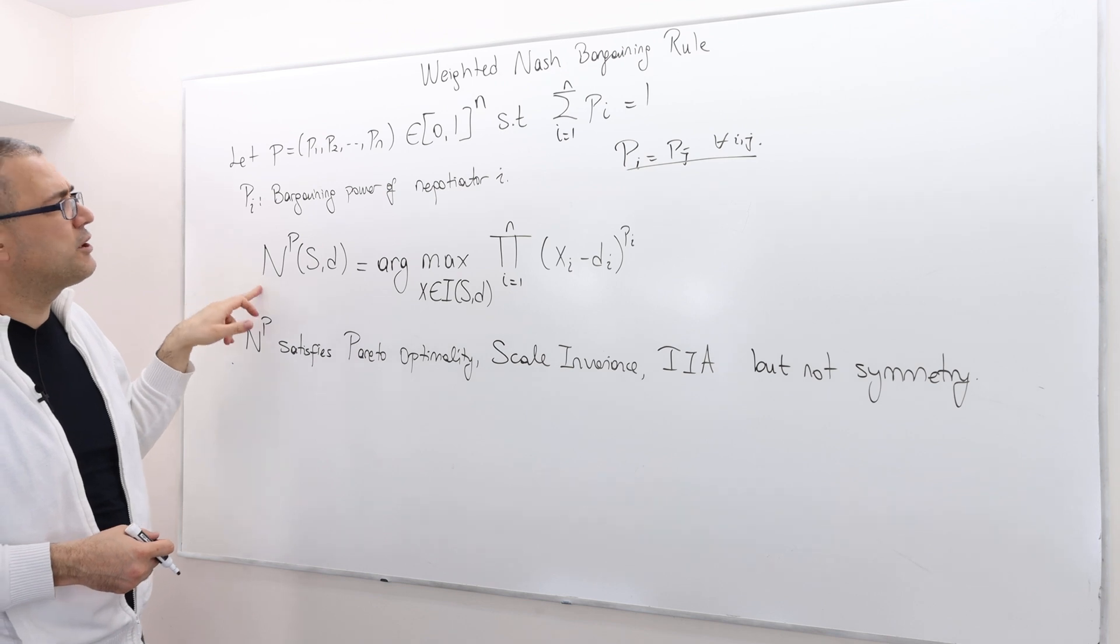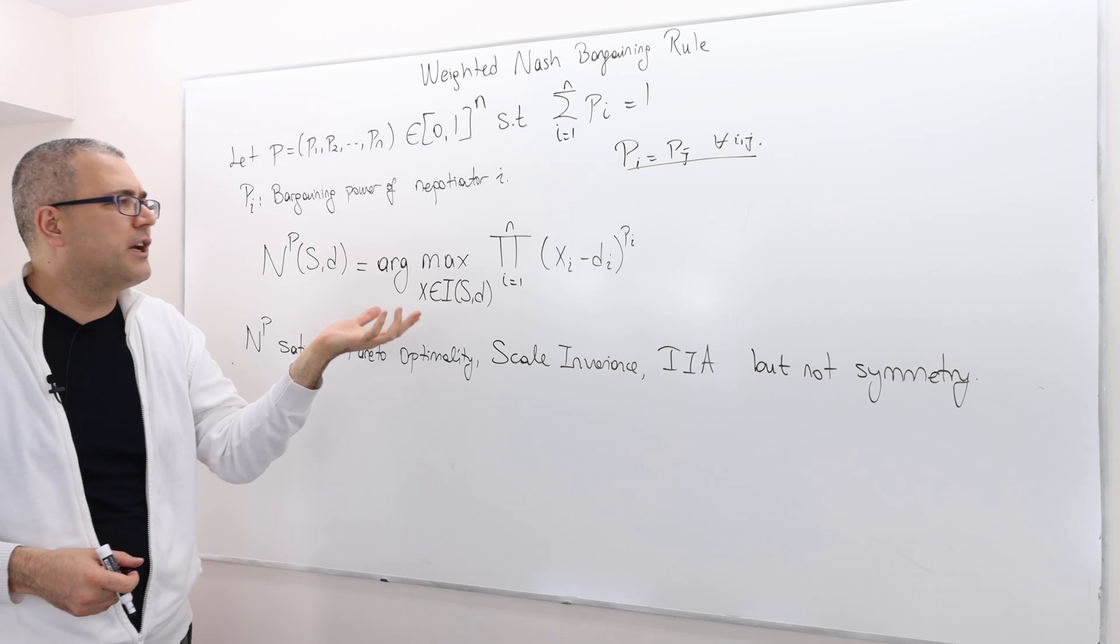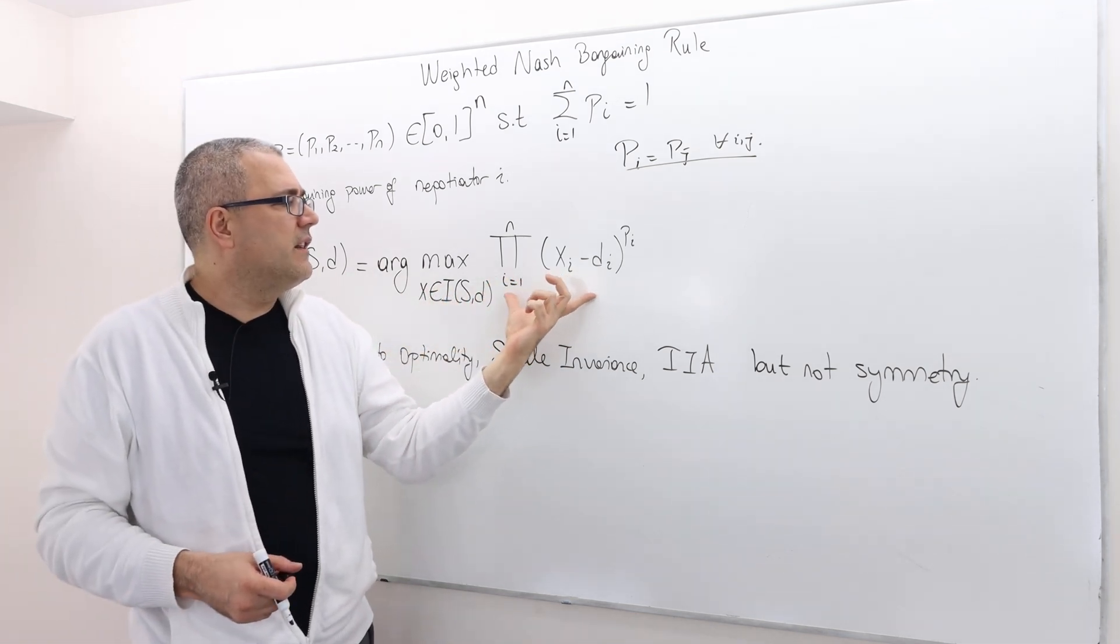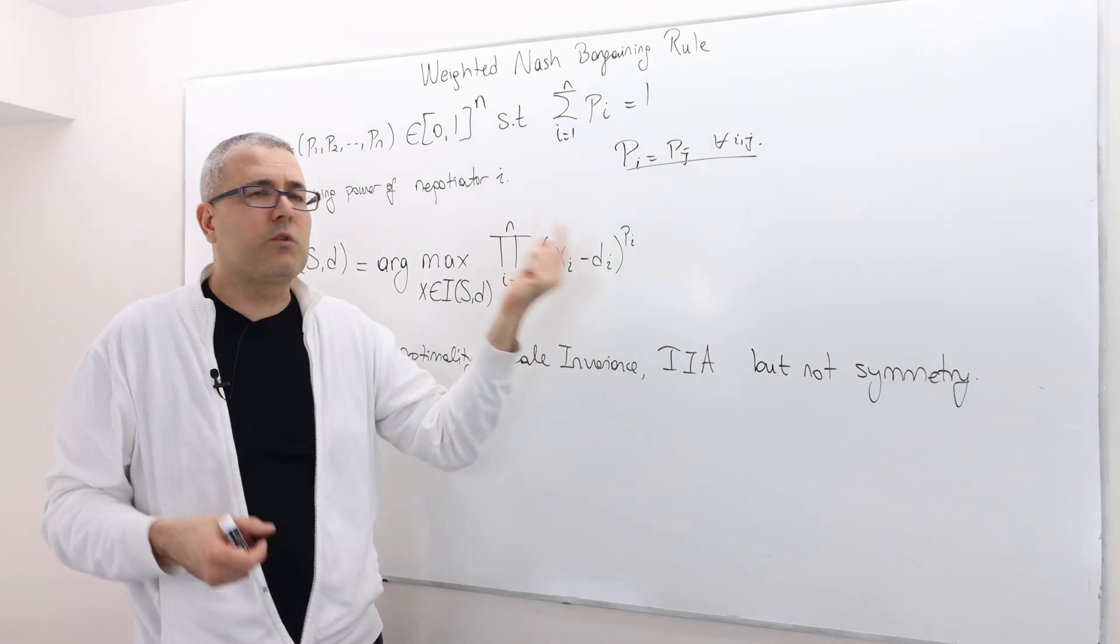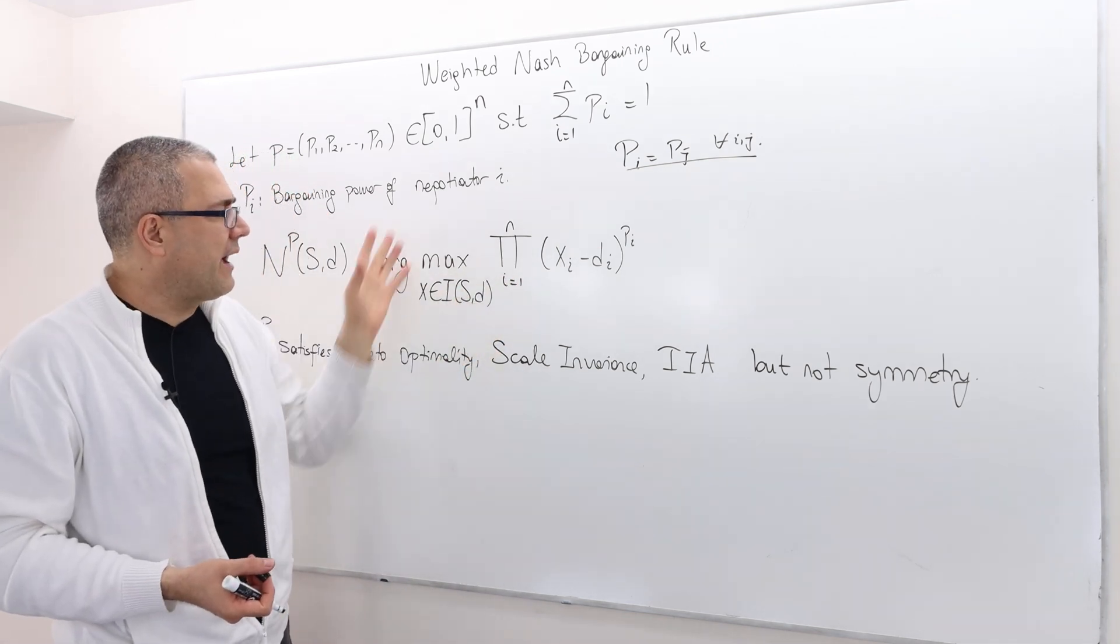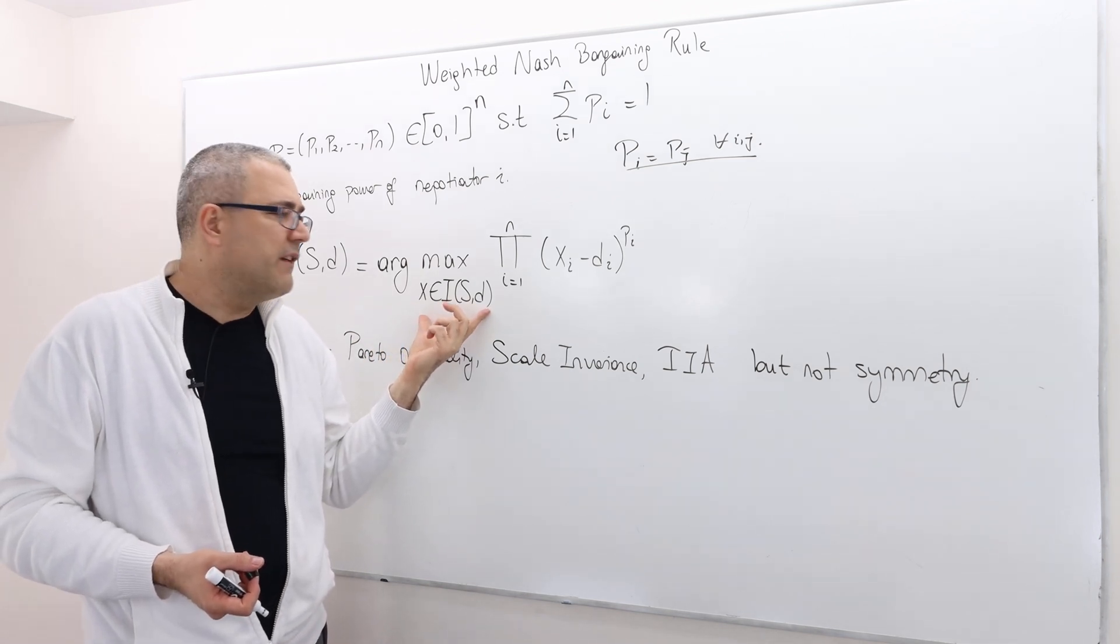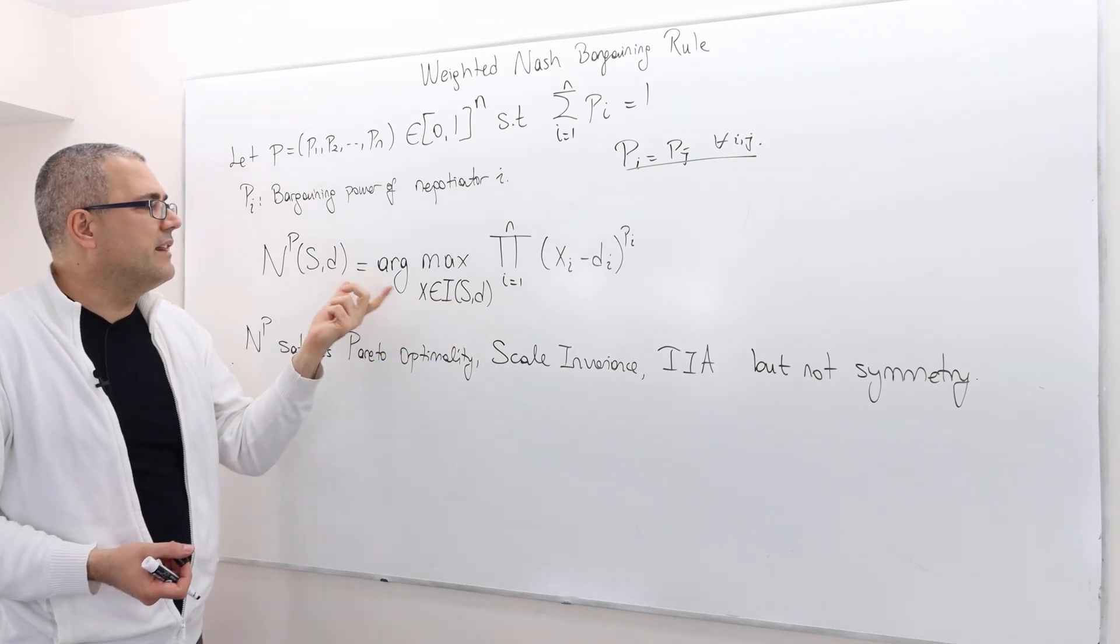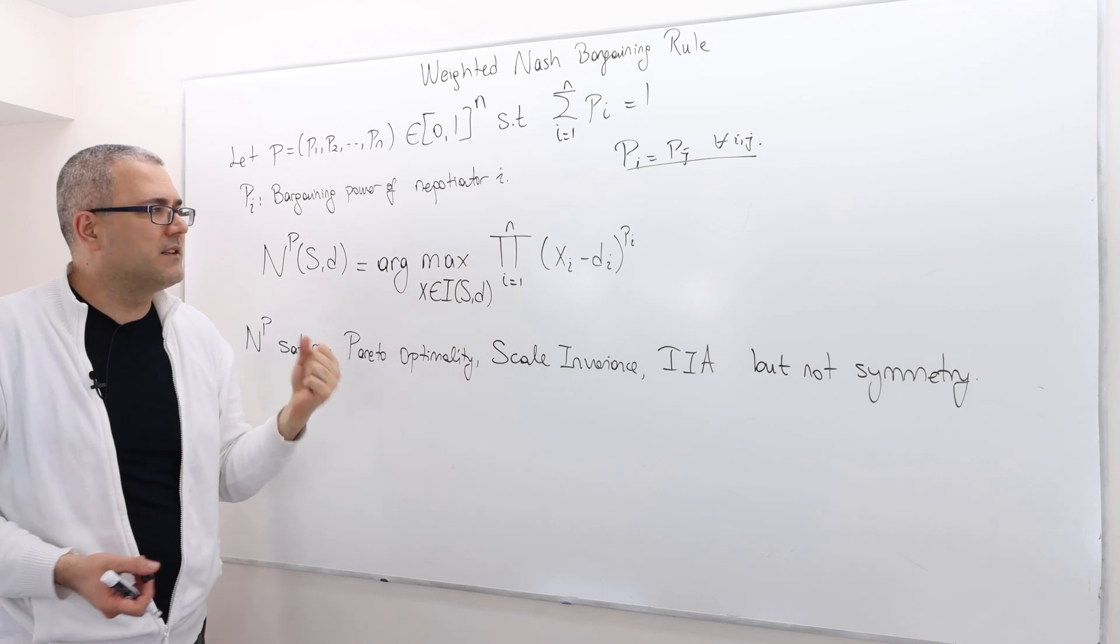Now, the weighted Nash bargaining rule is defined by exactly the same way as Nash bargaining rule. The only difference is that in this multiplication, we do have X-I minus D-I to the power P-I. Okay. And then we multiply everything. And then we maximize this multiplication over all individually rational and feasible payoffs in the bargaining problem S-D. And then the solution is basically the one that maximizes this multiplication.